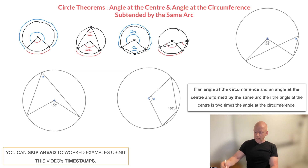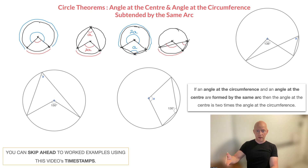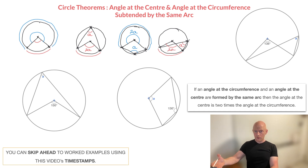We can now see that what we're dealing with is an angle at the circumference as well as an angle at the center, which are both being subtended by the same arc. Consequently, we can use the theorem and state that if the angle at the circumference is a, then the angle at the center must be 2 times a.